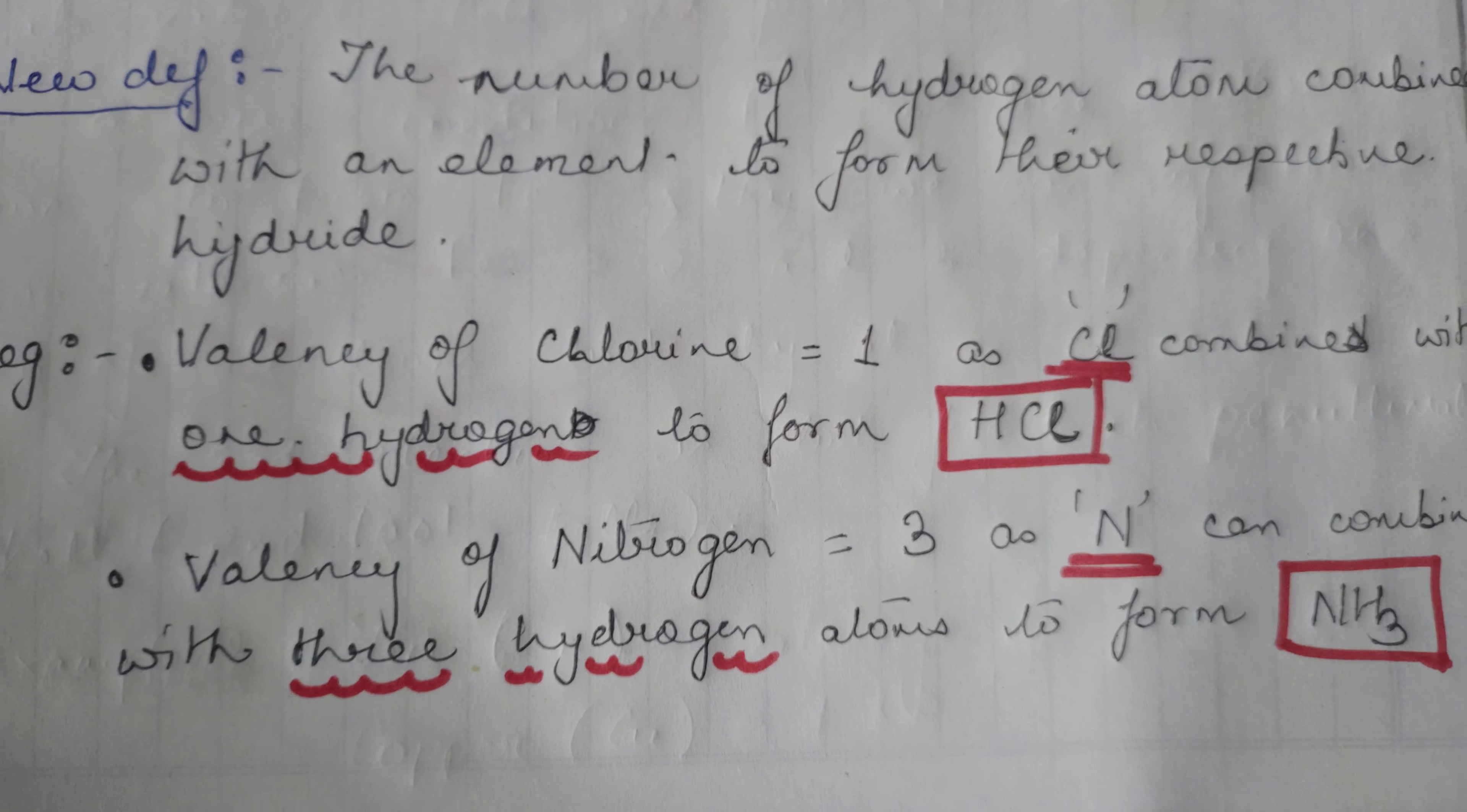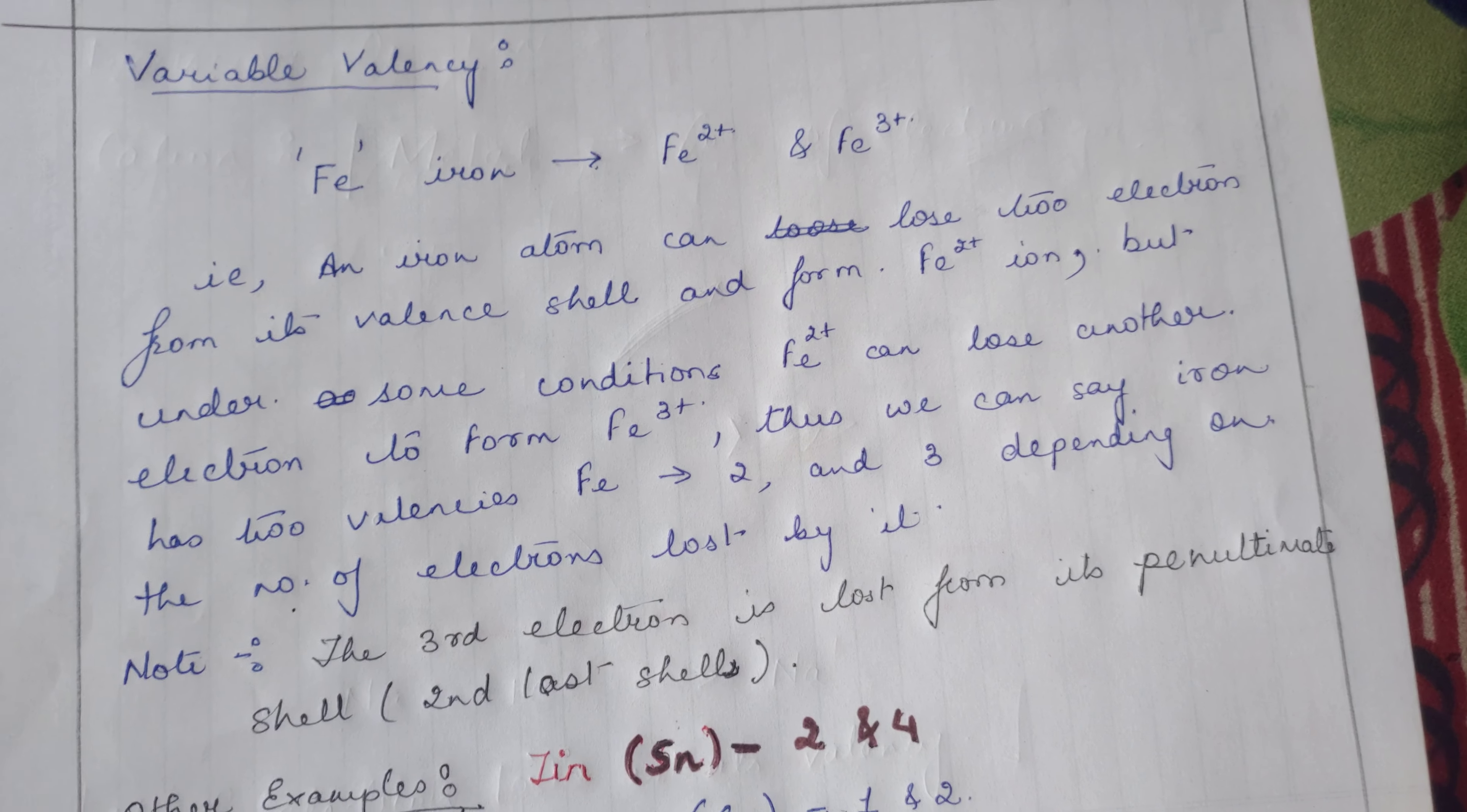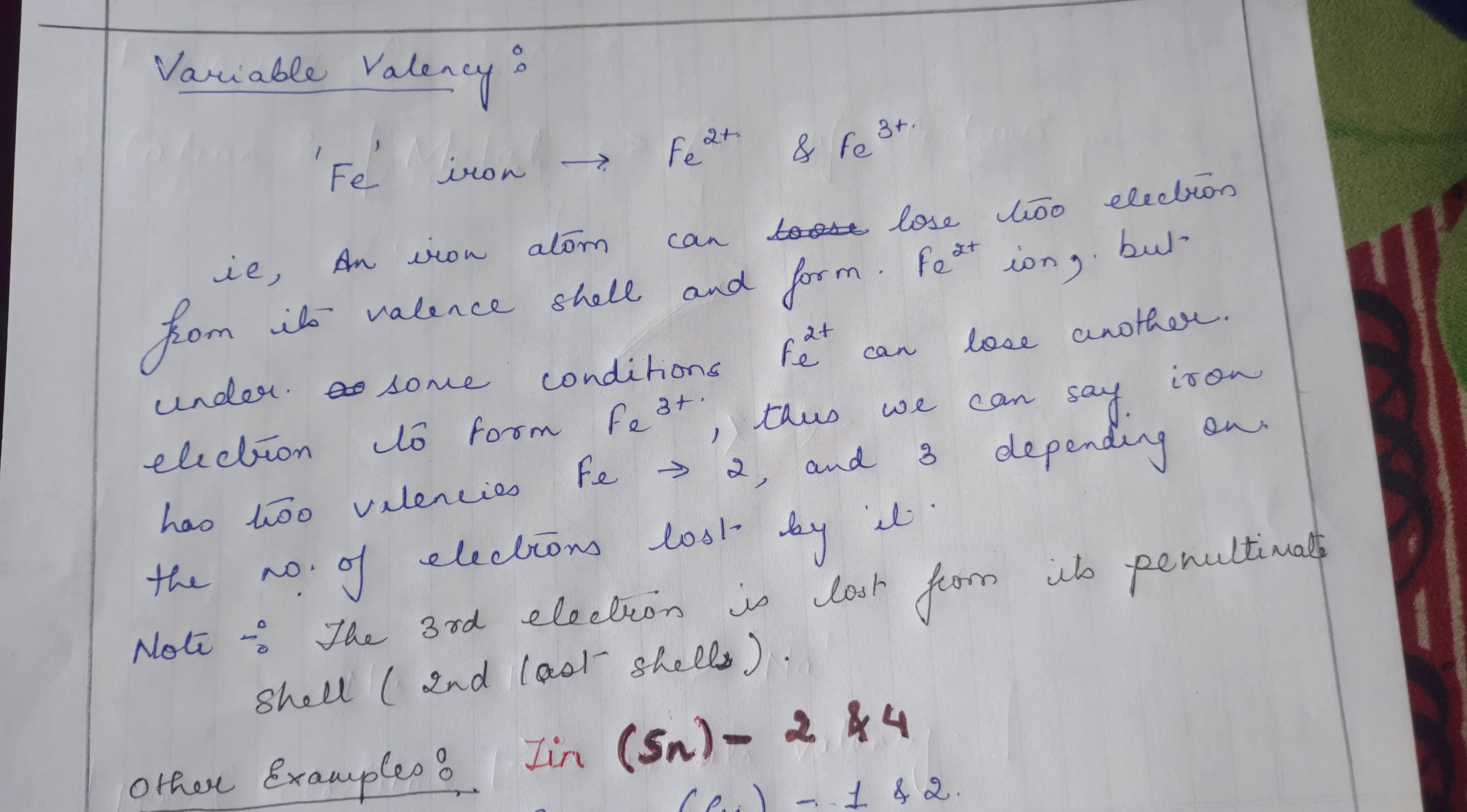Under that situation, we can say the valency of chlorine is one since there is only one hydrogen. Another example: if you want to find the valency of nitrogen, you can see nitrogen combines with three hydrogen atoms. What is the valency of nitrogen? Three. So valency is the combining capacity of an element where it combines with hydrogen. The number of hydrogen atoms combined is the valency.